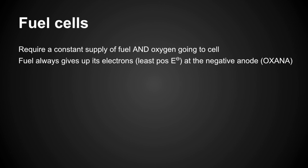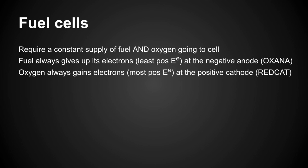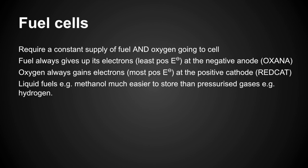Moving on to fuel cells. Fuel cells require a constant supply of fuel and oxygen. The fuel always gives up electrons — least positive electrical potential — at the negative anode, where oxidation takes place (remember: OxAna). Oxygen always gains electrons — most positive electrical potential — at the positive cathode, where reduction takes place (RedCat). Liquid fuels such as methanol are much easier to store than pressurised gases such as hydrogen.